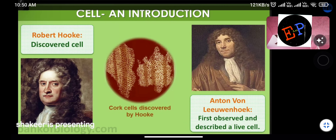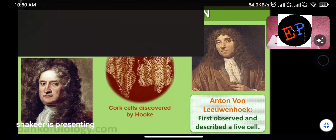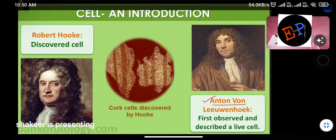Robert Hooke made the first discovery of a cell. Then Antony van Leeuwenhoek first observed and described a living cell — a cell which has life. So the first discovery of a cell was by Robert Hooke, and a living cell was first described by Antony van Leeuwenhoek.